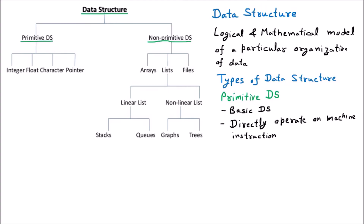The third important thing is that primitive data structures have different representations on different machines. Some books say that integer is having two bytes; many systems say integer is having four bytes. So integer is the same, but how much memory it consumes and what is the way of representation — that depends upon machine to machine. Maybe you are using a different Windows or operating system, then the representation will be different. Now we are taking examples of the primitive data structure: integer, float, character, and pointer.